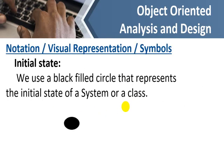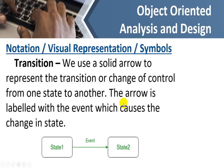Let's look at the symbols or notation. The first is the initial state — from where we start. We use a black filled circle to represent the initial state of a system or a class. Then we have transition: we use a solid arrow to represent the change of control from one state to another, and the arrow is labeled with the event which causes the change in state.